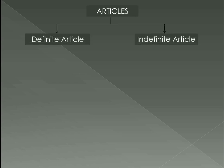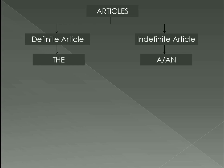Articles are of two types: definite article and indefinite article. The definite article is 'the', and the indefinite articles are 'a' and 'an'. Definite means we use 'the' when we know that particular object or person, when it has already been referred to, or when the context makes it clear. A definite article is used for some unique objects. There are certain rules which we will be discussing later on.